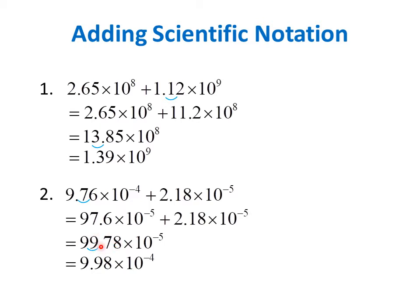Notice that the coefficient of this sum has 2 digits before the decimal point. So if we want to write the final answer in scientific notation, we have to move this decimal point 1 place to the left. So we get 9.978, and the 7 becomes 8 since it is followed by 8, which is larger than 5. Since we moved the decimal point 1 place to the left, the exponent becomes larger by 1, so negative 5 becomes negative 4.